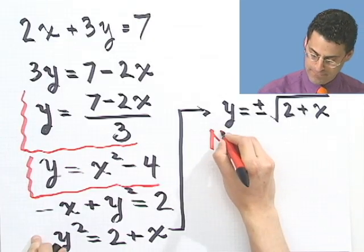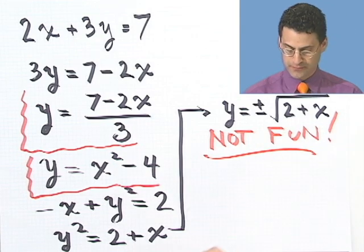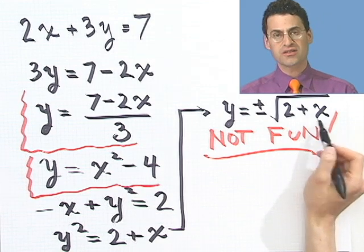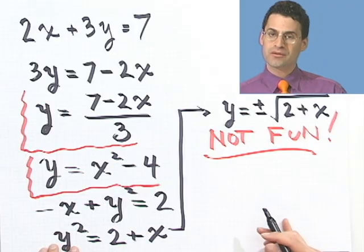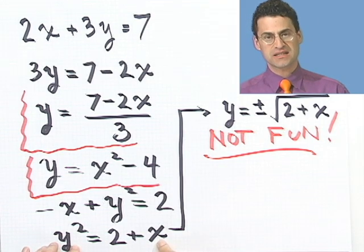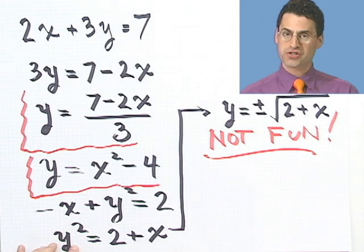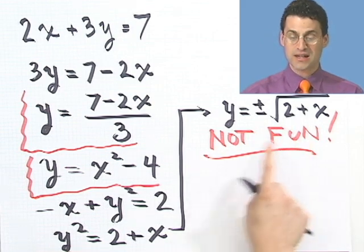So this is not a function, because for some values of x we actually have two values for y. It turns out, though, this is a function of y — meaning I could solve this for x and see that x is a function that depends only on y. But it's not a function of x, since I can't solve for y and get one answer.